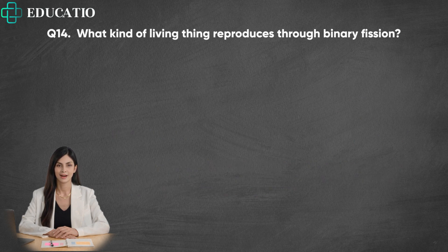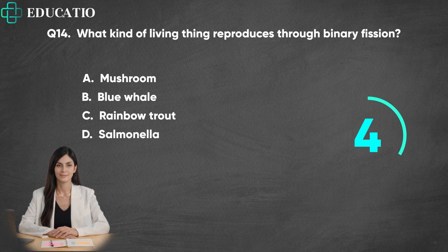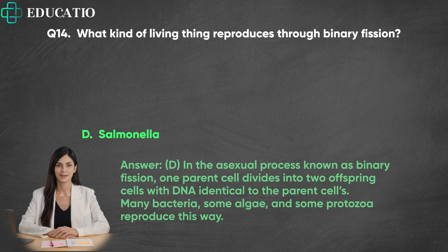Question 14. What kind of living thing reproduces through binary fission? A. Mushroom. B. Blue whale. C. Rainbow trout. D. Salmonella. Answer: D. In the asexual process known as binary fission, one parent cell divides into two offspring cells with DNA identical to the parent cells. Many bacteria, some algae, and some protozoa reproduce this way.